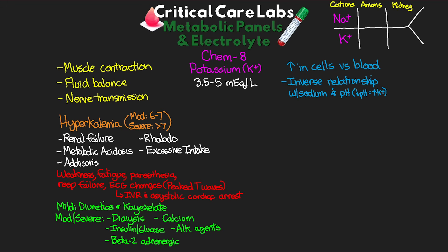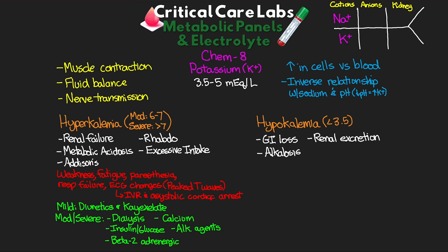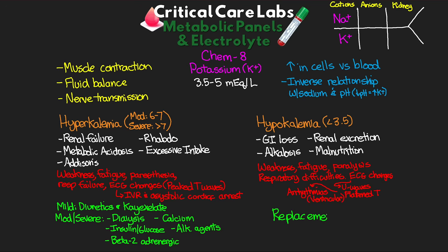On the flip side, if potassium is too low, this is hypokalemia — typically less than 3.5 mEq/L. Common causes are GI losses, renal excretion from hyperglycemia or diuretics, alkalosis, and malnutrition. Signs and symptoms include weakness, fatigue, paralysis, leg cramps, constipation, and respiratory difficulties. More severe hypokalemia can result in ECG changes — you might see U waves or flattened T waves — and this can result in arrhythmias including ventricular rhythms. Treatment involves replacement of potassium.